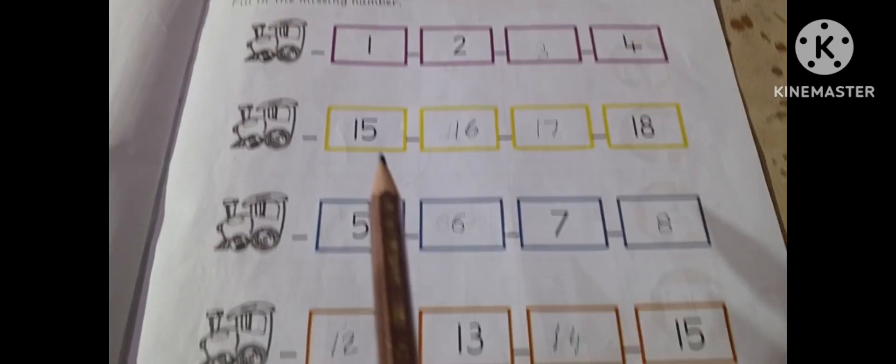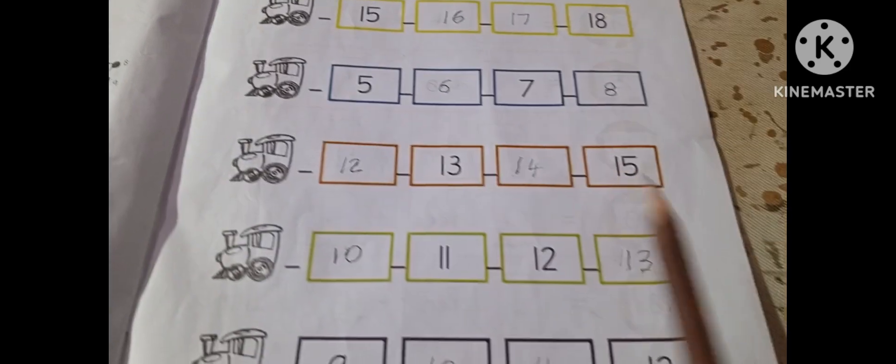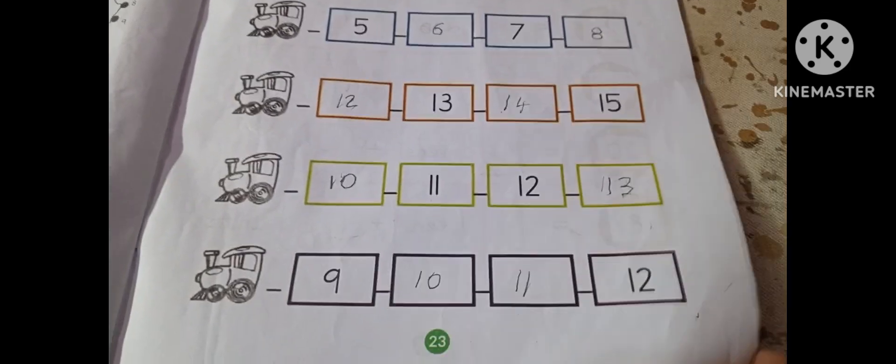Fill in the missing number. After 15, 17, 18, 5, 6, 7, 8, 12, 13, same. You will count it.